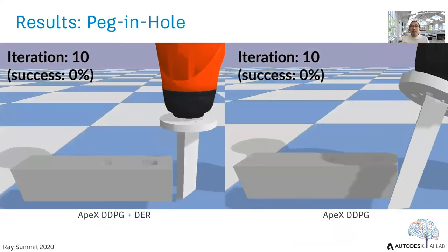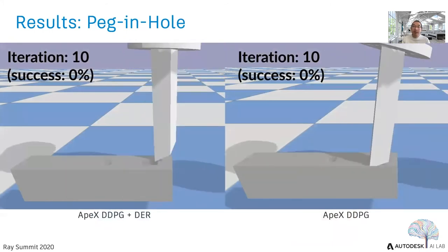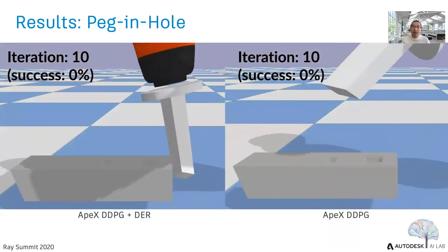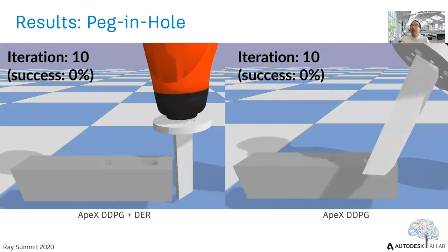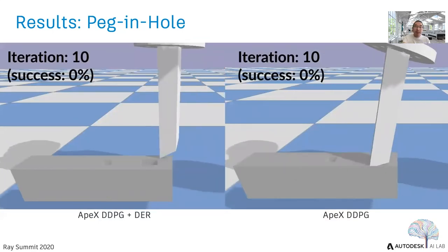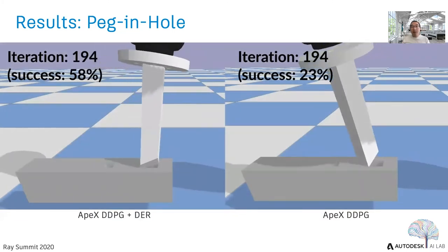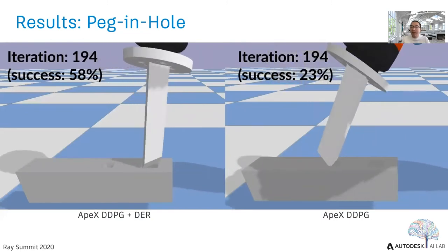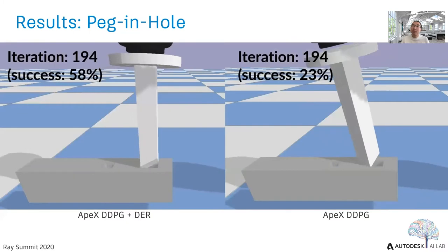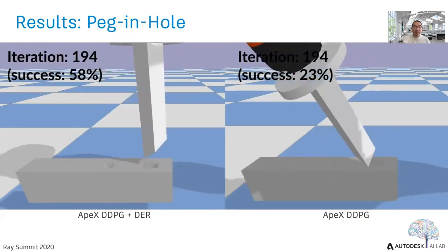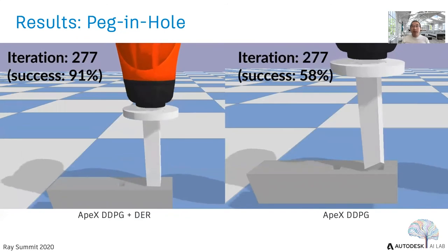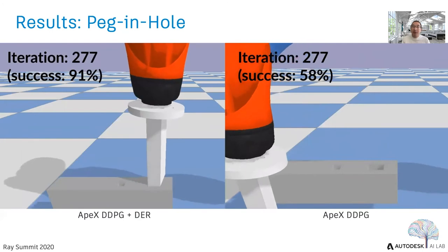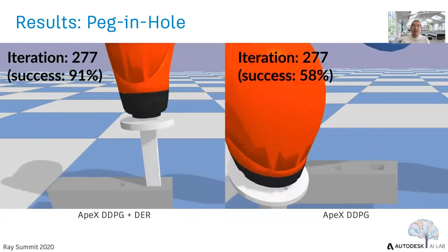We compare our algorithm with APEX DDPG on two assembly tasks: packing hole and lap joint. In the packing hole task, initially both agents randomly explored the space. In the middle of training, our method figured out the general goal and reached a success rate of 58%, while vanilla APEX DDPG was still exploring. By the end of training, our method reached a success rate of 91%, while pure APEX DDPG only reached 58%.